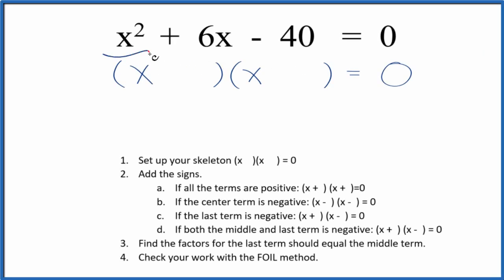Let's get back to the equation x squared plus 6x minus 40 equals 0 and we're going to use these steps, these guidelines here to help us do that. The first thing we want to do is set up a skeleton equation.